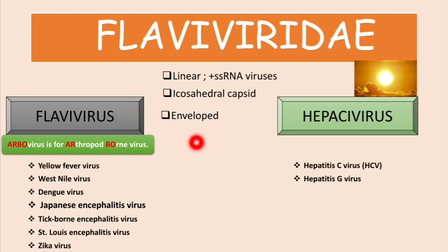We talked about these general features in the previous videos, so you can click the link on the top right corner and watch those videos first, where we talked about the yellow fever virus, the West Nile virus, and the dengue virus. In this video we are only focusing on the Japanese encephalitis virus.